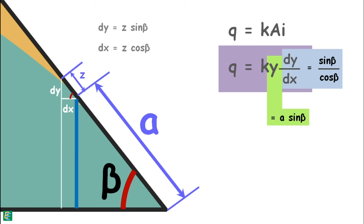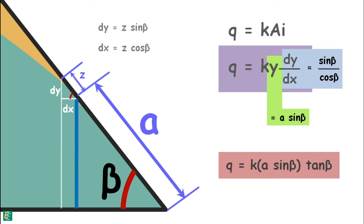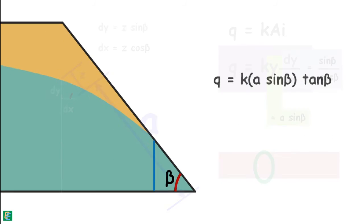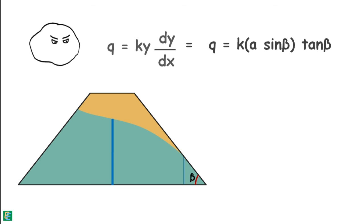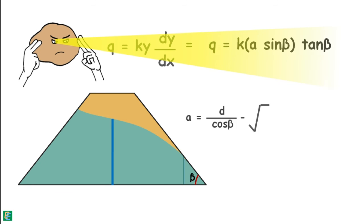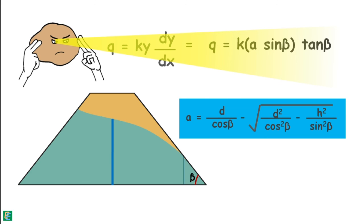So discharge can be written as q = k × a × sin(beta) × tan(beta). In this equation the only unknown is a. Once we know a, we can calculate the seepage discharge. The value of a can be found by equating the discharge through any section of the dam and the discharge through the exit section. By integrating and applying simple mathematics, we arrive at a simple equation that gives us the value of a.